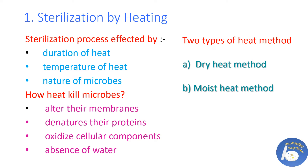Sterilization by heating is the most common and easiest method to kill microorganisms. Heat kills microbes by altering their membranes, denaturing their proteins, oxidizing their cellular components, and through absence of water. Effectiveness of heating depends on duration, temperature, and nature of microbes. High temperature for a longer period of time kills more microorganisms. Heat-sensitive microorganisms can be killed easily — only 10 minutes of exposure is enough — while heat-tolerant microbes take longer to kill.